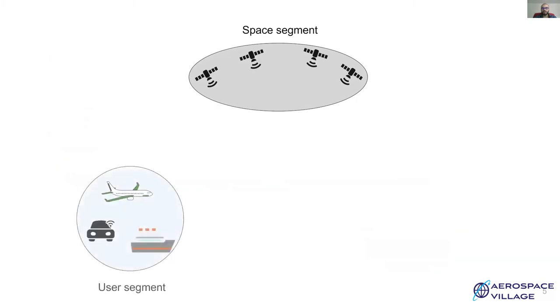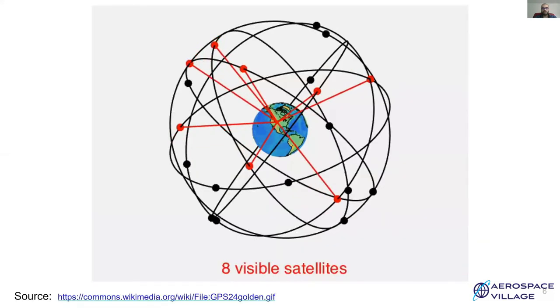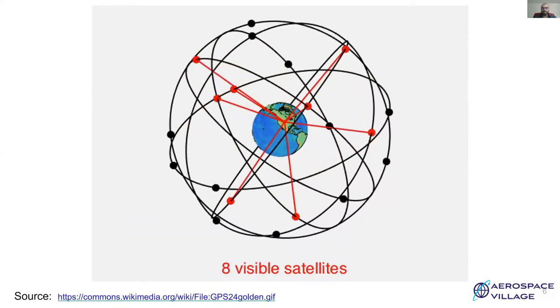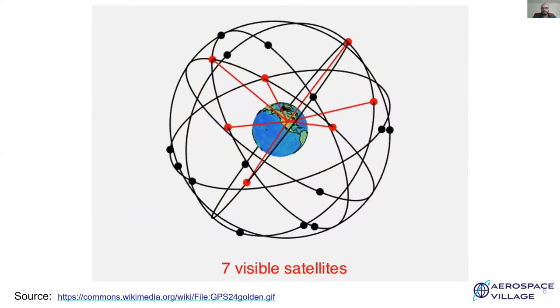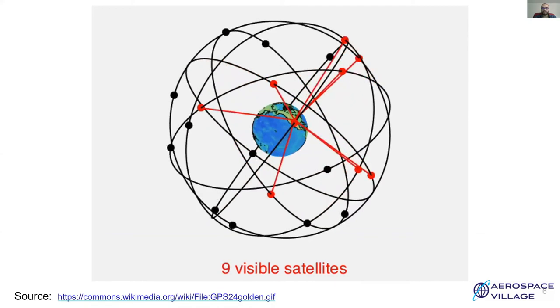GPS is made up of three segments. First is the space segment. It consists of satellites that transmit the essential information required to calculate the location. The user segment which uses the information transmitted by the satellites to compute its location and the control segment which is used for making time and ephemeris corrections. The orbits of the satellites are programmed such that at any time at least four satellites are visible and can provide location services. These orbits are controlled by the control segment on ground.